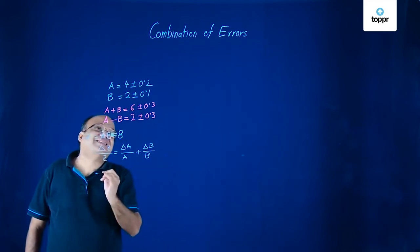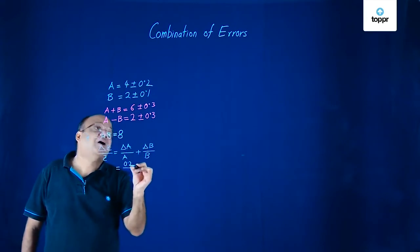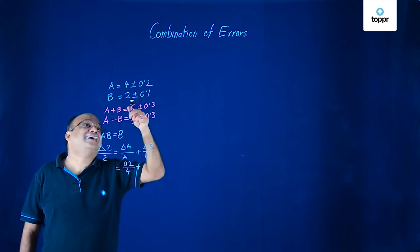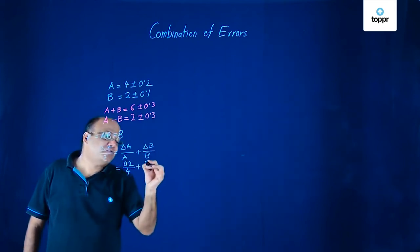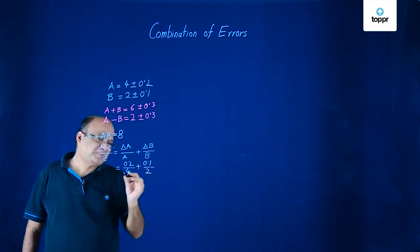Delta Z by Z will be equal to delta A by A plus delta B by B. So understand that. What is delta A? Delta A is here, 0.2. How much is A? 4.